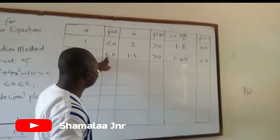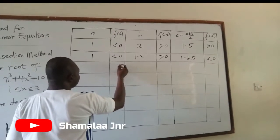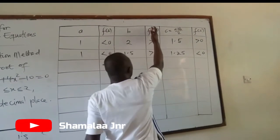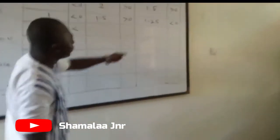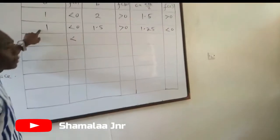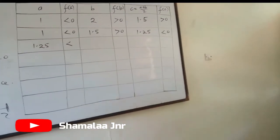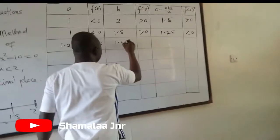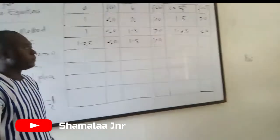Now we continue. Because the functional value of 1.25 is less than 0, experience has shown that the functional values of all elements in the A column will be less than 0, and the functional values in the B column will always be greater than 0. Because 1.25 is less than 0, it has to go and replace 1, whose functional value is also less than 0. So 1.25 replaces 1; it cannot replace 1.5 because 1.5 is greater than 0.